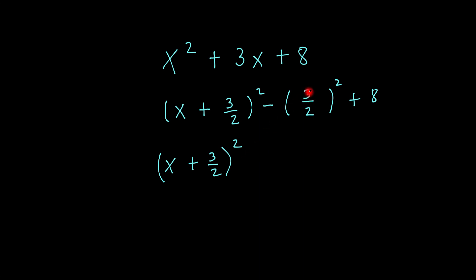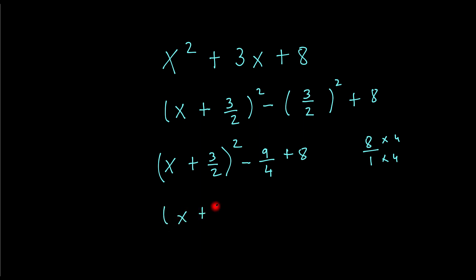And if I square this, remember to square the top and the bottom — so that will give me minus 9 over 4 plus 8. Now if I want to convert 8 into a fraction, we just write that as 8 over 1, and then the denominator is 4, so we multiply the top and the bottom by 4. That will give me x plus 3 over 2 all squared minus 9 over 4 plus — now 8 times 4 gives me 32 over 4. So that's me converting that into a fraction.